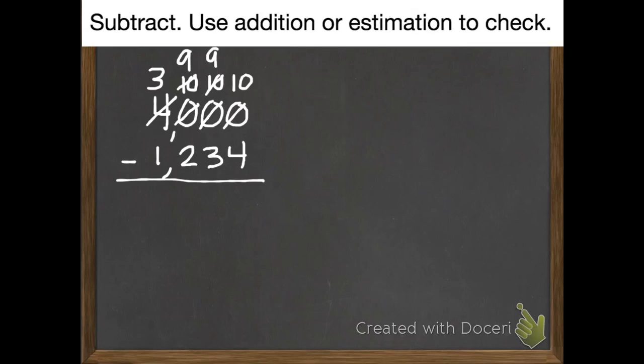Now we're in business. So 10 subtract 4 is 6. 9 subtract 3 is 6. 9 subtract 2 is 7. And 3 subtract 1 is 2. So we get 2,766.